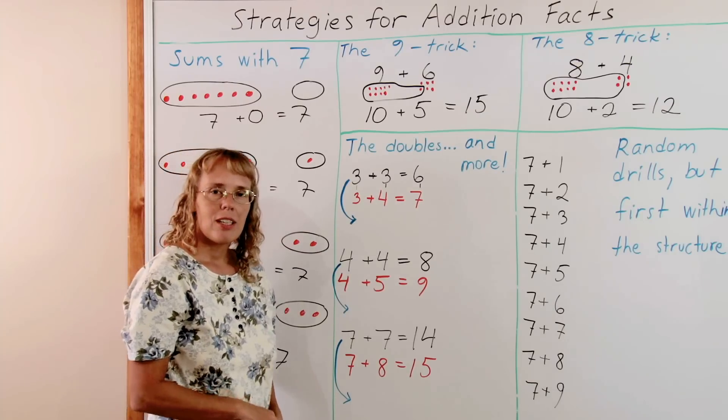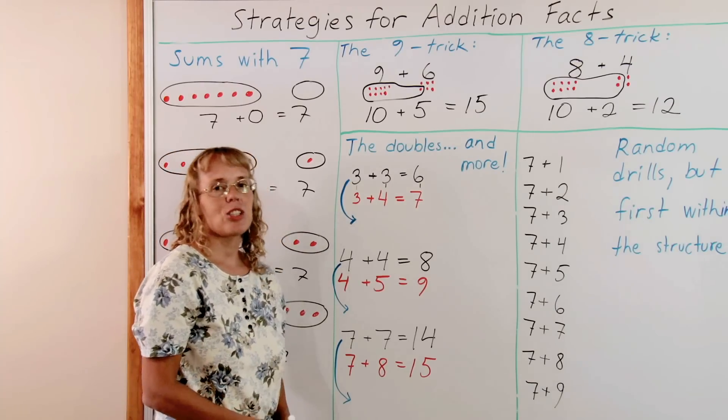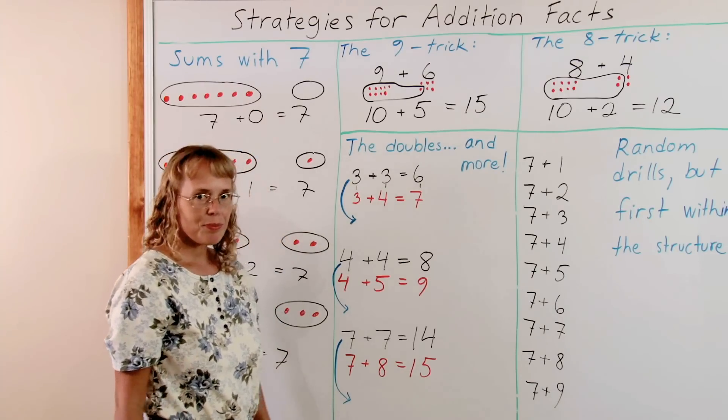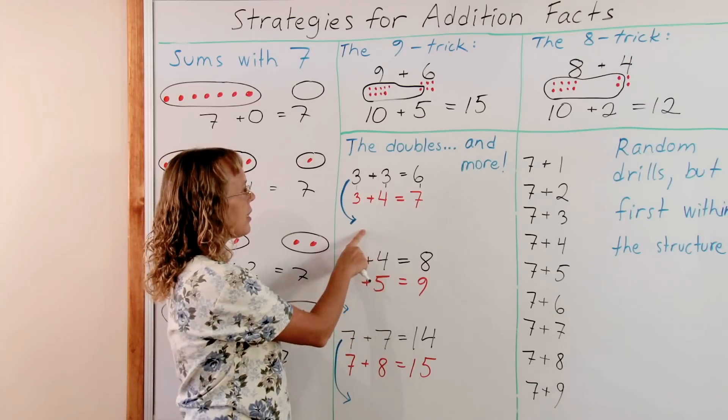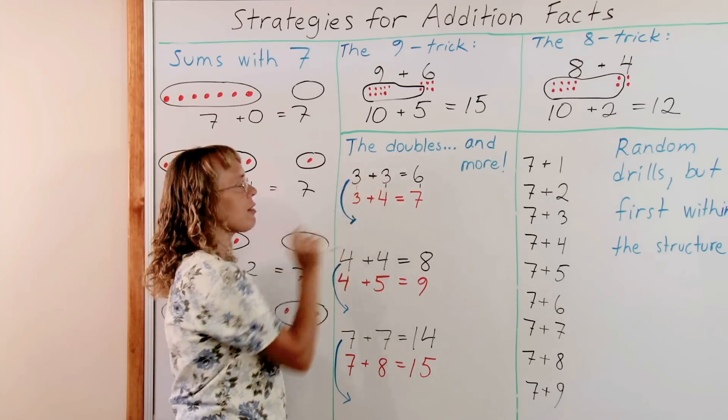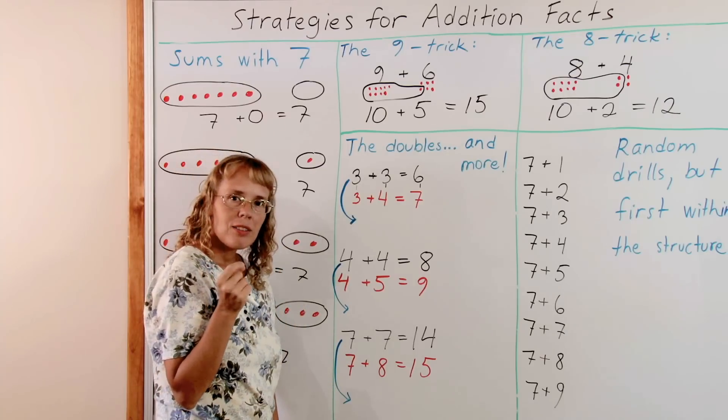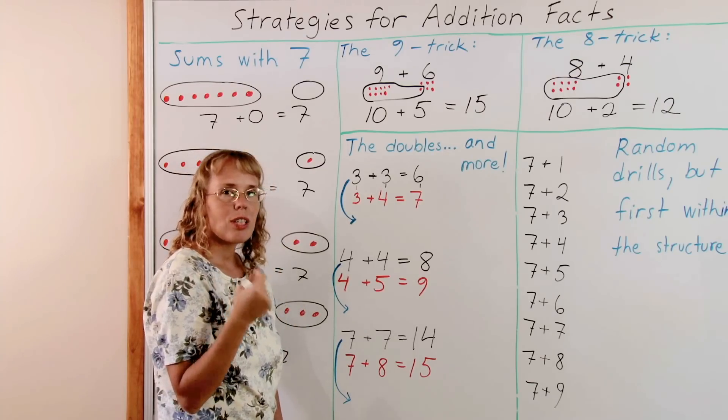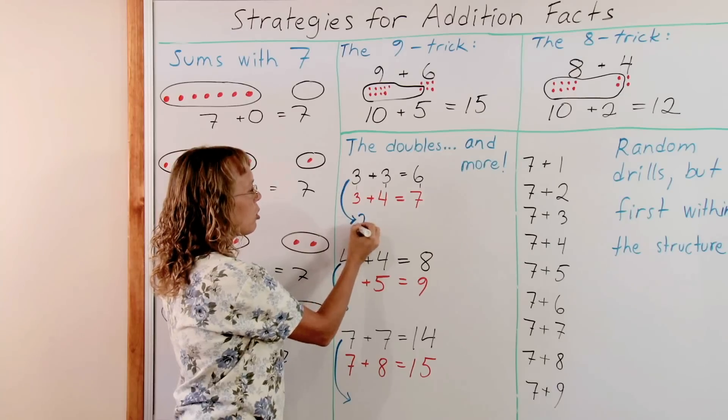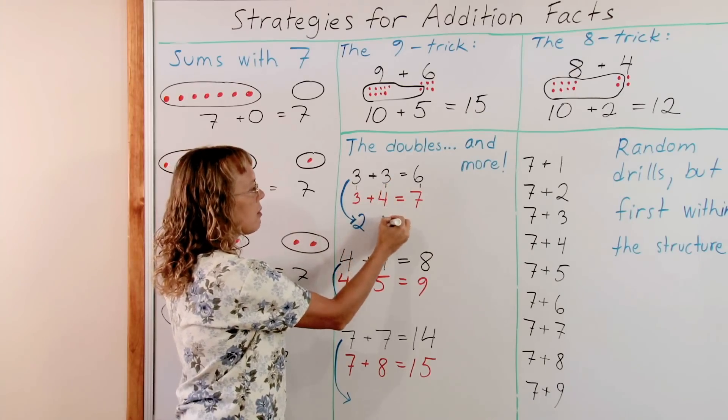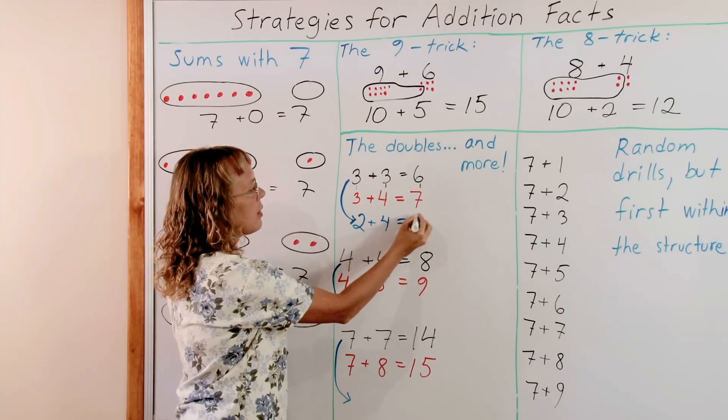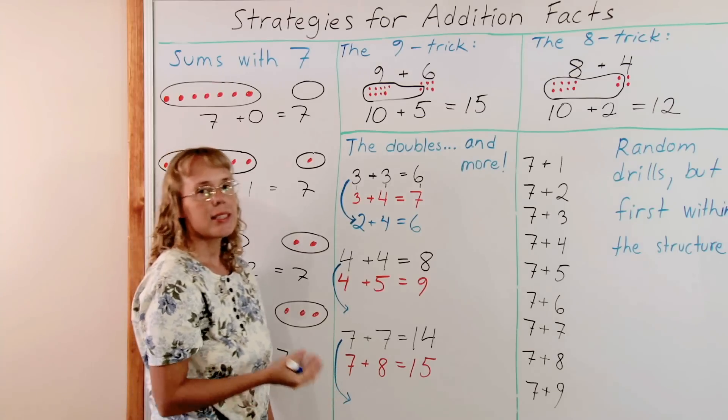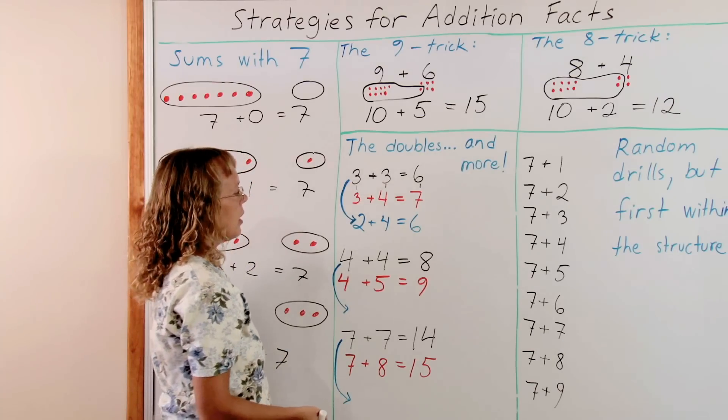But that's not all. There's yet another type of addition fact we can get from the doubles. And that is thinking of 3 and 3. Think that 1 from the 3 goes to the other 3. So that here this becomes 2 and this 3 becomes 4. And the sum is the same. 6.